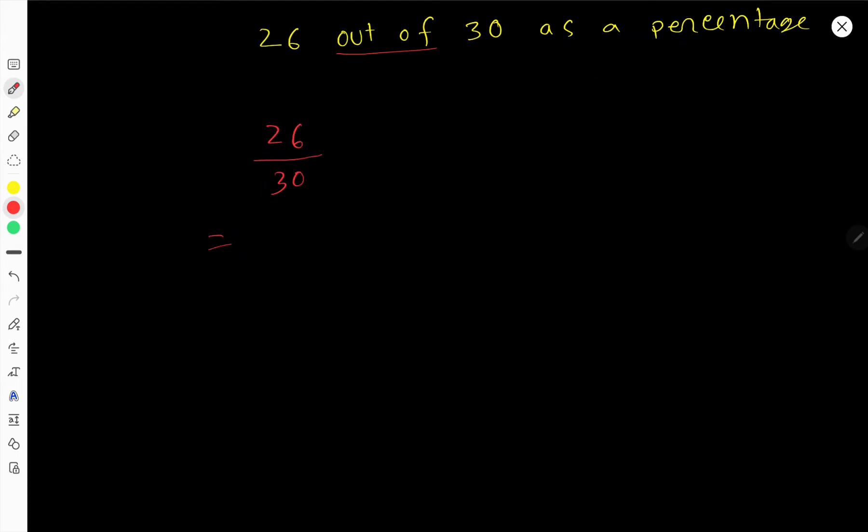We can rewrite this fraction times 1. The value of this and this is equal. We can write 1 as 100 divided by 100. This 100 and 100 cancel each other and we get 1. So instead of 1 we can write 100 divided by 100. You know that percent means 1 over 100.